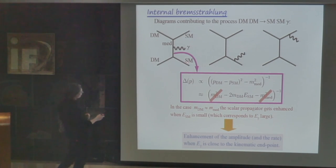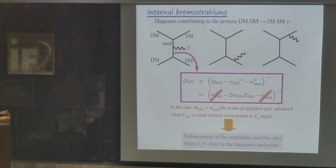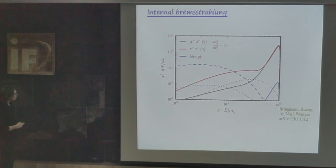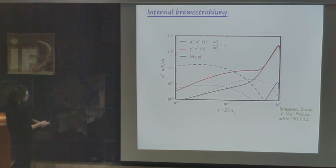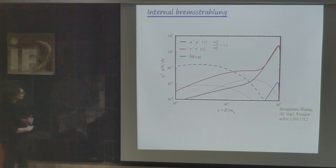If the dark matter mass is close to the mediator mass, you expect an enhancement of the cross-section — a peak in the energy spectrum — when the energy of this photon is close to the kinematic endpoint. This is visible in the figure: when the mediator mass is very close to the dark matter mass, you expect to see a sharp bump towards the endpoint of the spectrum. Given the energy resolution of our instruments, this is very similar to a gamma ray line.